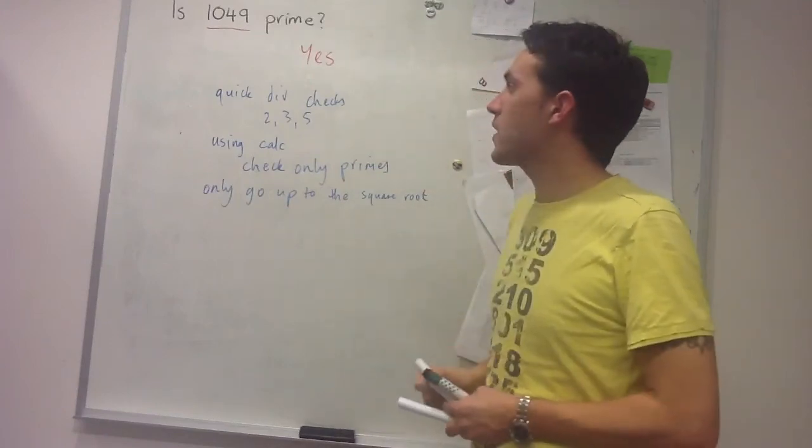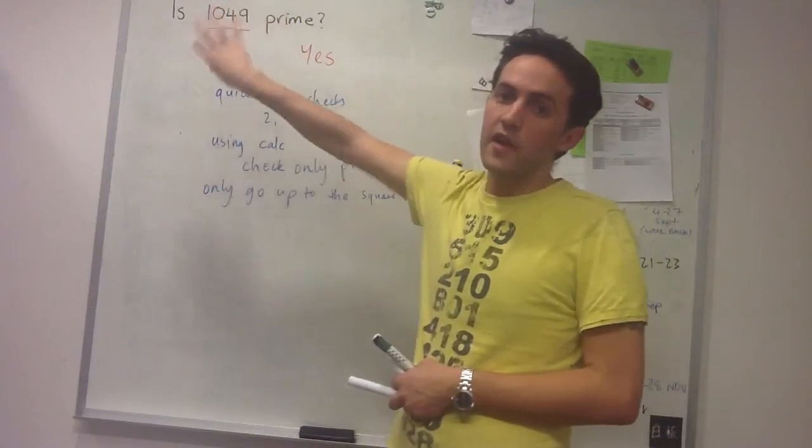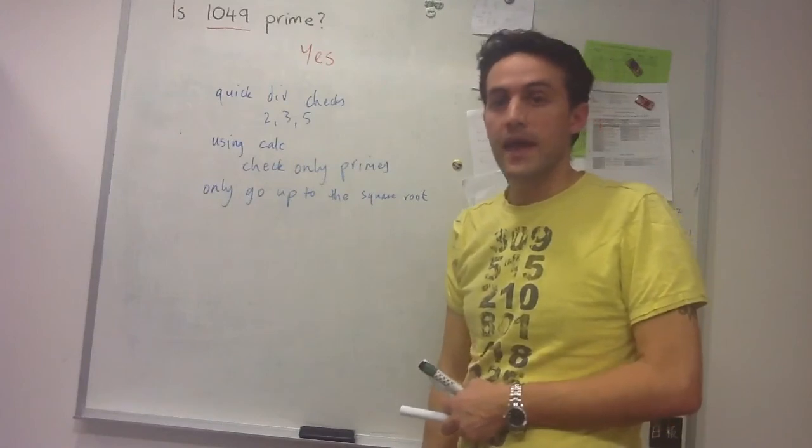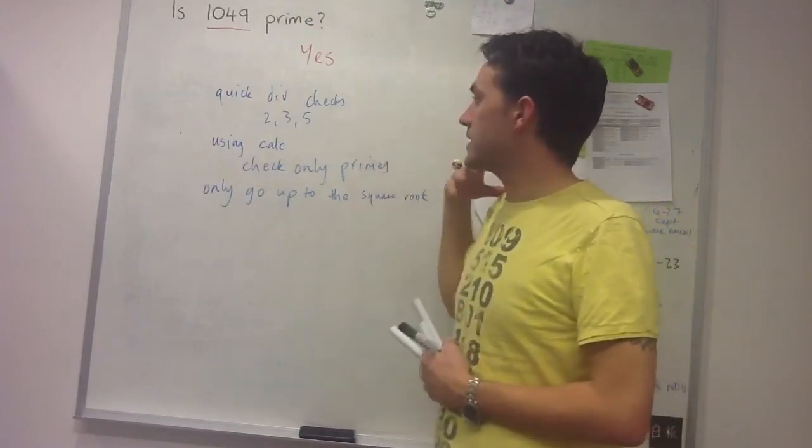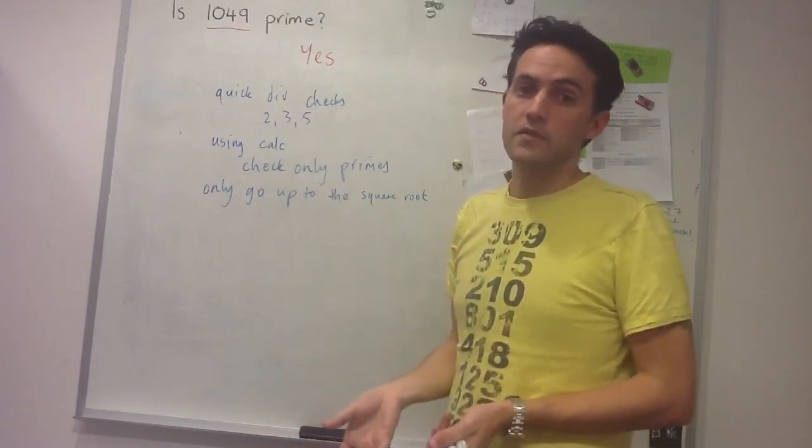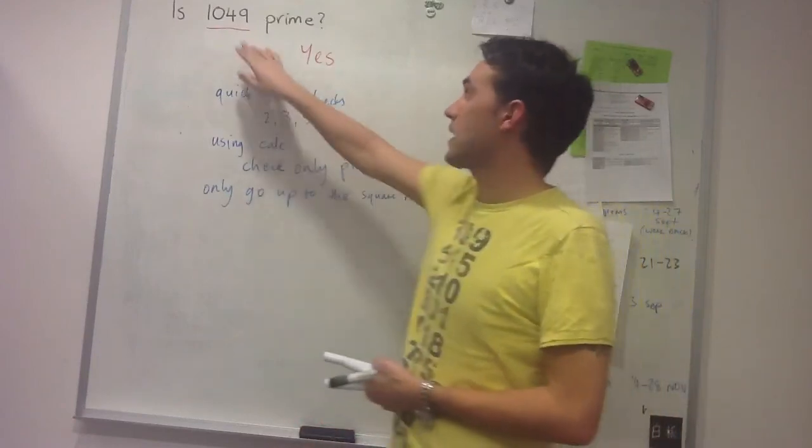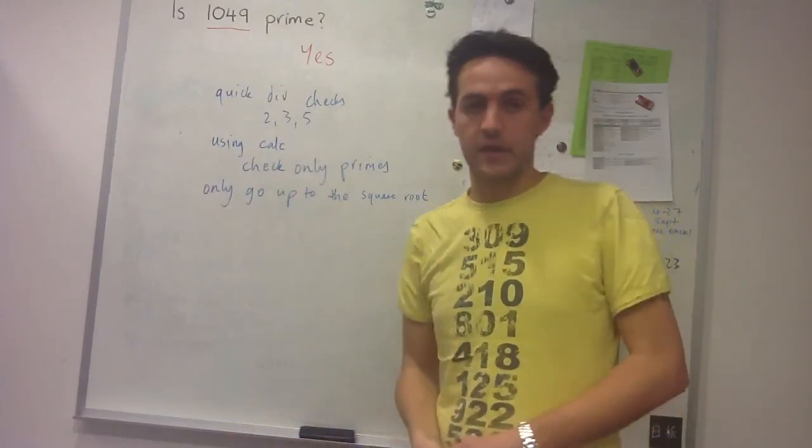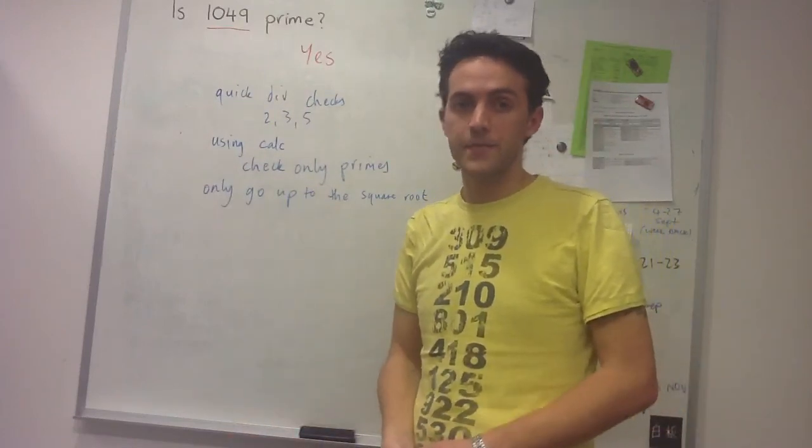So in this case, we only go up to about 35, because 35 squared will give us something around about this figure. And so using this method, we saw we only have to check about 10 numbers to see whether a number like this is prime. So anything under 1,000, you should be able to do in less than 30 seconds or so.